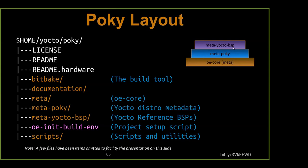We then have meta-poky, our distribution layer, which rides on top of the base OECore layer. It implements policy changes and modifications to recipes through BB appends so that you can modify what you want to build. On top of that, there's a BSP layer — in this case meta-yocto-bsp — which has changes, policy, and machine configuration pieces for each of the machines supported by the Yocto project. If you want to find the QEMU recipes, they're all in meta. The actual Yocto kernel recipes exist in meta; the BSP has configurations and modifications for them.